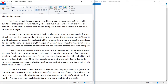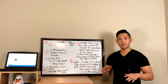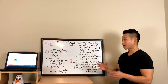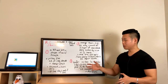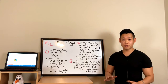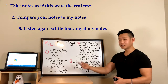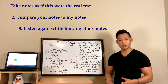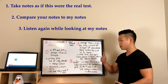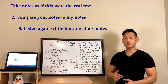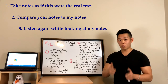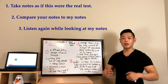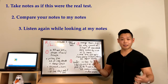Now that we're done reading the passage and taking notes, let's go back to the whiteboard and listen to the lecture. Before I turn on the lecture, please pause the video and copy the note-taking diagram on the board in red. Refrain from copying the sentences in black — I want you to first listen to the lecture as if this were the real test and take notes. Once done, compare your notes to mine, then rewind and listen again while looking at the whiteboard.